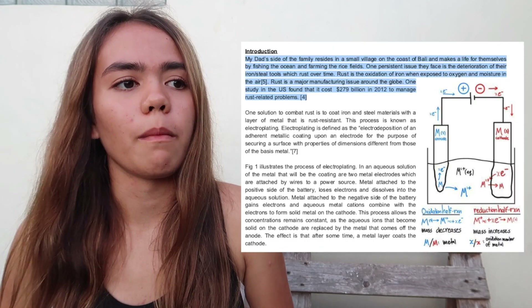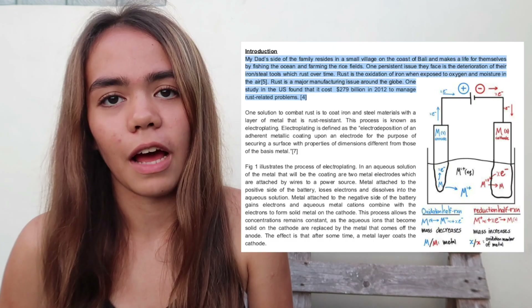Now we're going to look at my chemistry IA. I'm not going to read it all out because it's a bit long, but I'll highlight certain parts. I'm less proud of my chemistry IA because I was running out of time and had to be a bit cheesy — some bits I just put in because I had to. But other parts I think are still worthwhile. So I started off with a story about how my family are rice farmers and how they deal with rust constantly.